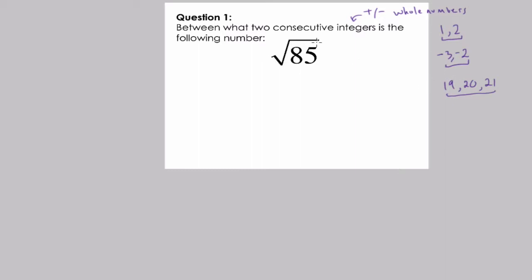The square root of eighty-five is a number that is irrational. We cannot represent this number as the ratio of two rational numbers — a fancy way of saying we can't write it as a fraction. We can only represent it with a decimal that never ends and never has a repeating pattern, or we can tell between what two integers it lies.